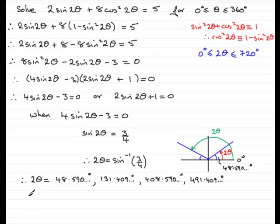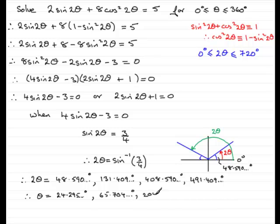Dividing each angle by 2 to find θ: 48.590/2 = 24.295...°; 131.409/2 = 65.704...°; 408.590/2 = 204.295...°; 491.409/2 = 245.704...°. So those are the four answers for θ from the factor 4sin(2θ) − 3 = 0.